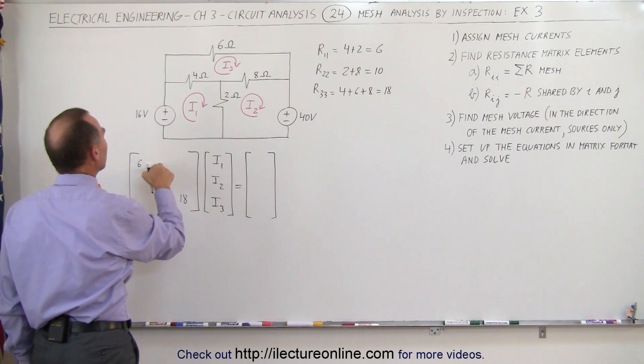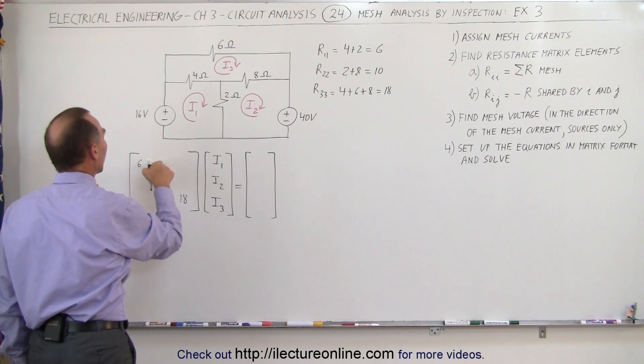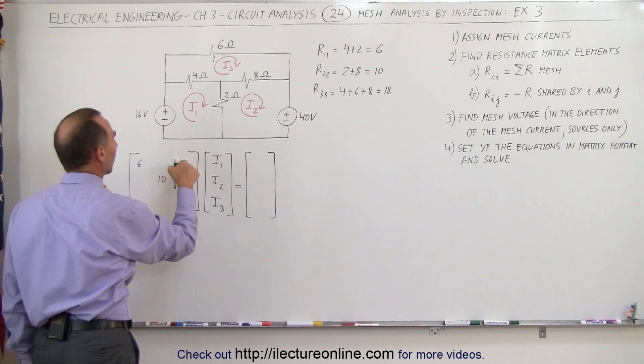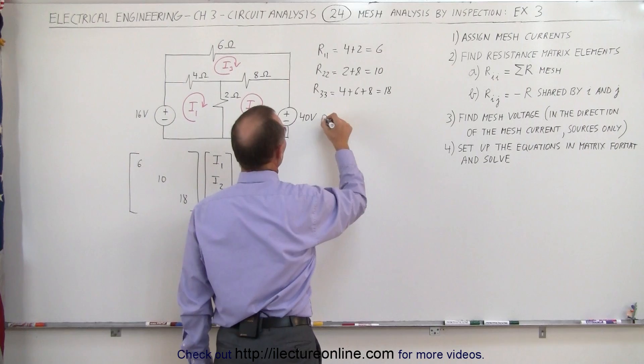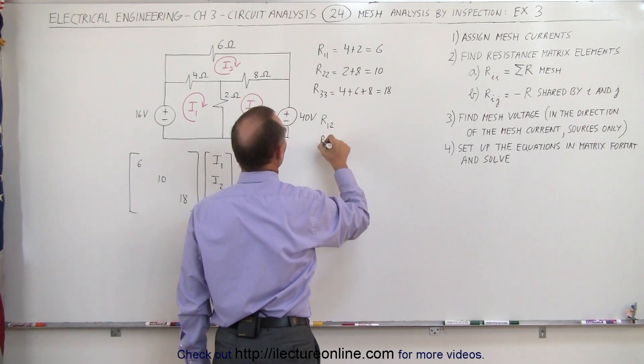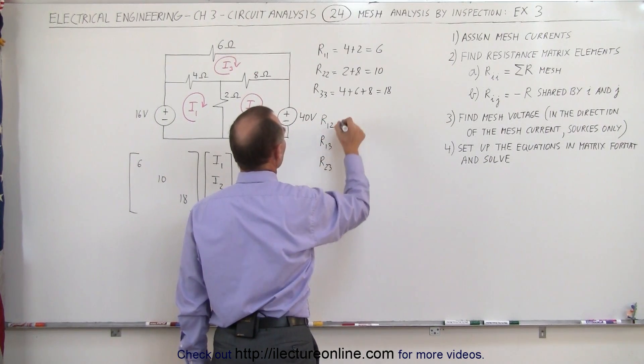Now here we need the resistance shared by 1 and 2. Here we need the resistance shared by 1 and 3, and 2 and 3. So we get those elements, R between 1 and 2, R between 1 and 3, and R between 2 and 3.